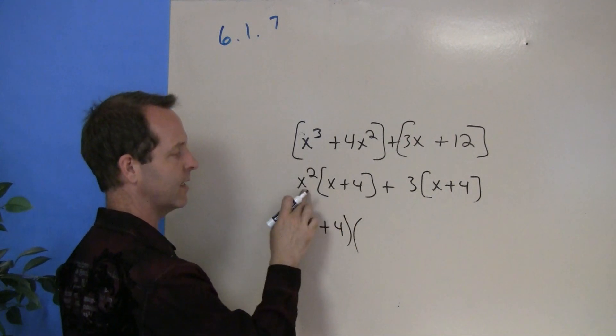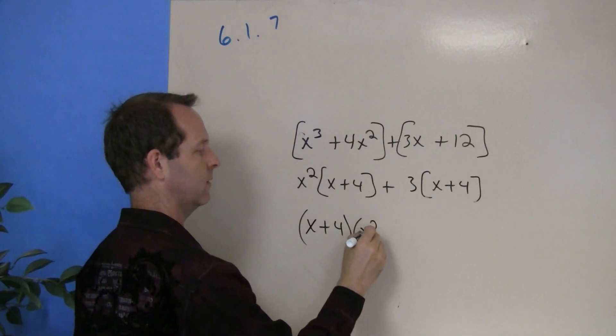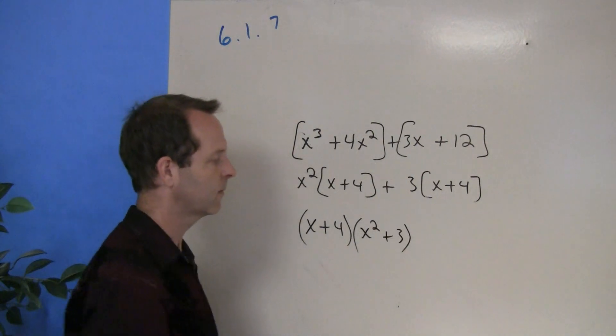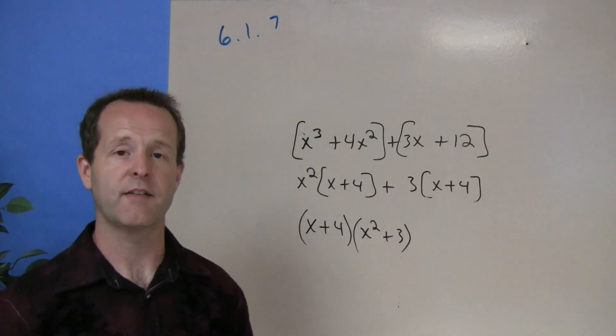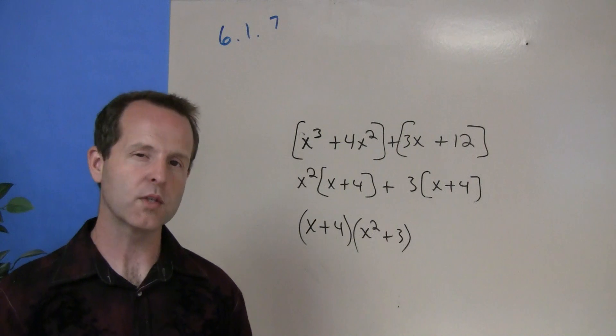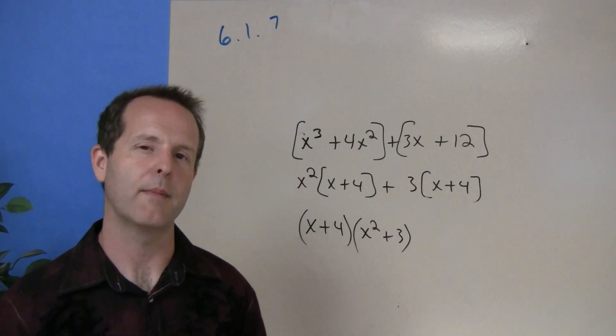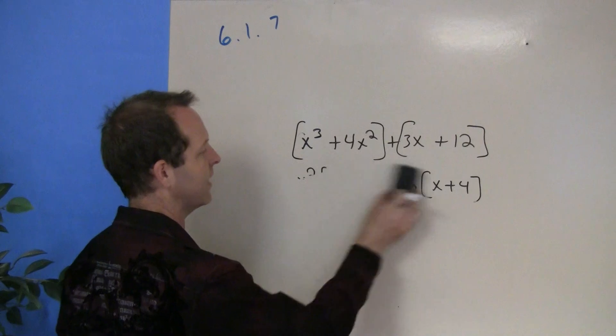And then what remains is this x squared plus that 3. And that's a little bit of a demonstration of how you factor by grouping. This one's going to take a little bit of practice because it's something that might be a little new to us. Let's look at another example.